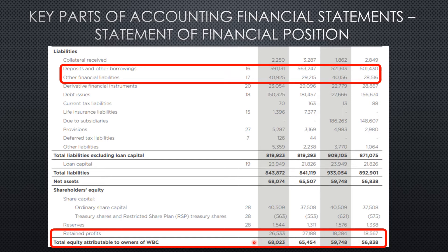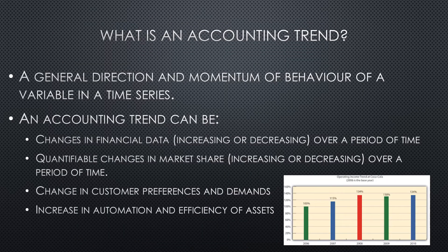The next thing to look at is whether the business is retaining profits in the shareholders' equity or owners' equity account. We can see here this is represented by an increase in total equity — from $56.8 million to $59.7 million, to $65.4 million, and to $68.02 million — which represents that the business's profits are being kept by the business. That is a good outcome, and it is reflected by the increase in retained profits.